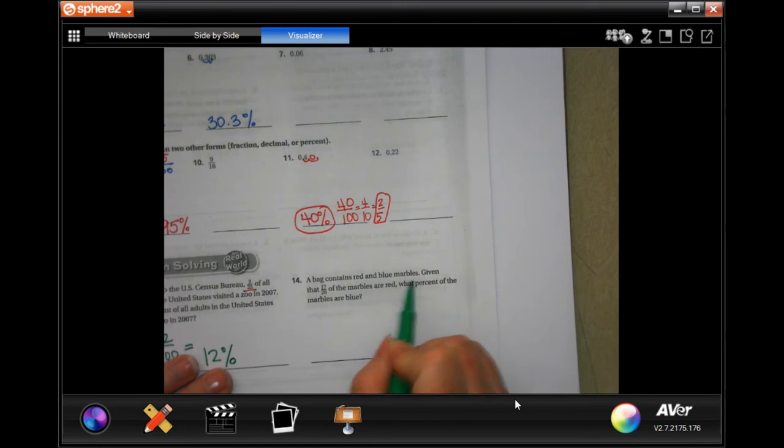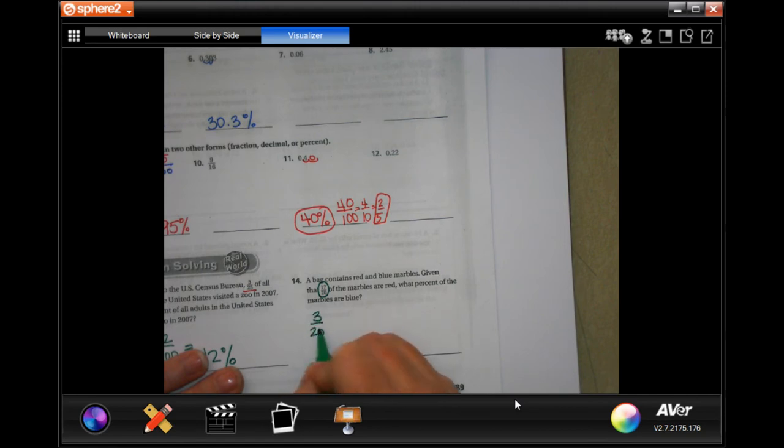All right. A bag contains red and blue marbles. Given that 17 out of 20 of the marbles are red, what percent of the marbles are blue? So, instead of using the 17 out of 20, I'm going to go 20 minus 17 is 3. So, I'm going to do 3 over 20. These ones are red. We need to know which ones are blue. The ones that are left are blue. So, that's 3 20th. In order to get 20 to 100, I need to multiply it by 5. So, I'm going to multiply the top by 5. Gets me 15 over 100, which is 15 percent.